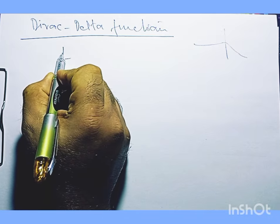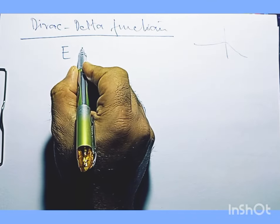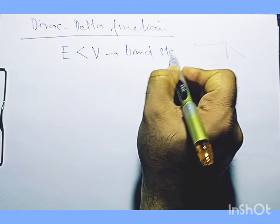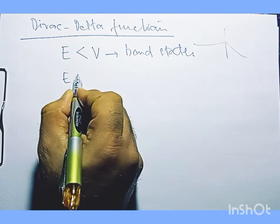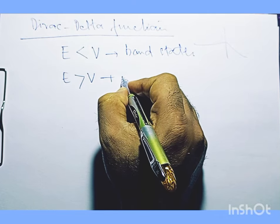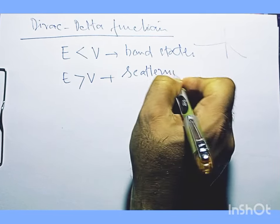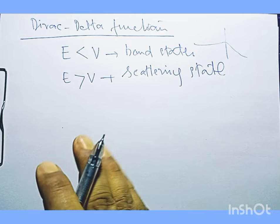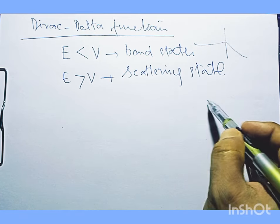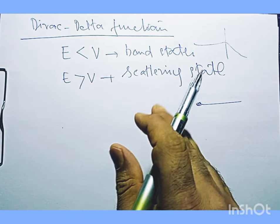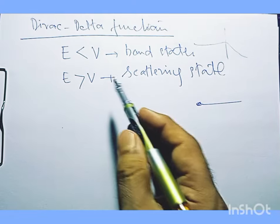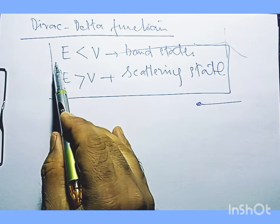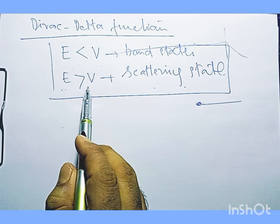If E is the energy and this energy is less than V, it will lead to bound states. And if E is greater than V, this will lead to the phenomenon known as scattering states. In real life, most potentials go to zero at infinity, so this criteria can be simplified: bound state for E less than V, and scattering state for E greater than V.